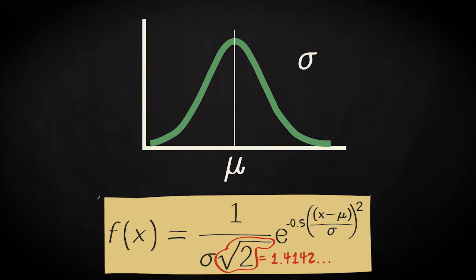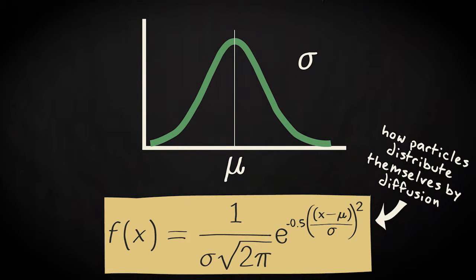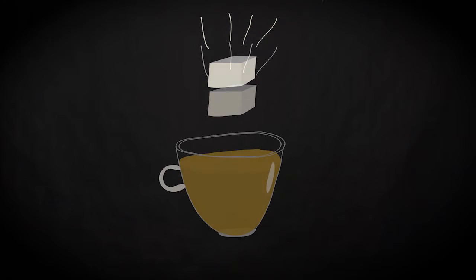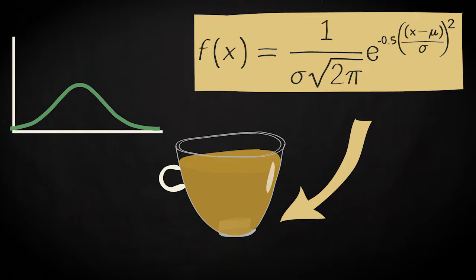But it is special because the equation connects the statistical realm to the material world. The equation describes how particles distribute themselves by a process called diffusion. If you release a diffusion compound, for instance sugar, in a cup of tea, then the concentration of the sugar will be distributed according to this equation.